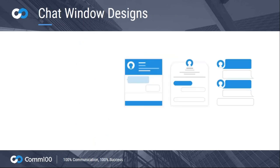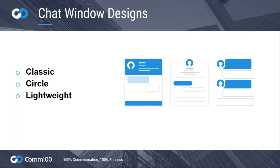Let's move on and take a look at our new chat window designs. Our classic design is what you will have defaulted to after the change — it has a clean, boxed interface, fairly similar to the design we had before but looking a little nicer and tidier. Our circle design is the second option, featuring a more rounded window where your team names and avatars really take center stage. And finally, our lightweight design offers a more minimalistic look and feel — it doesn't have a boxed interface and instead displays chat bubbles directly on your website. It's quite a modern look.